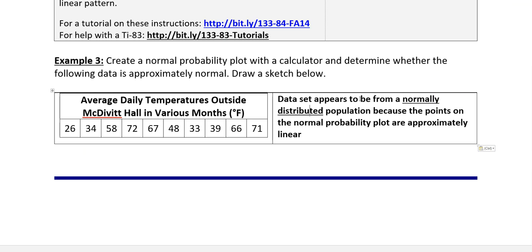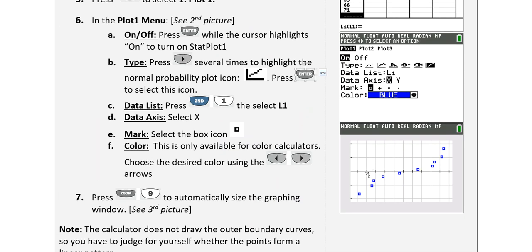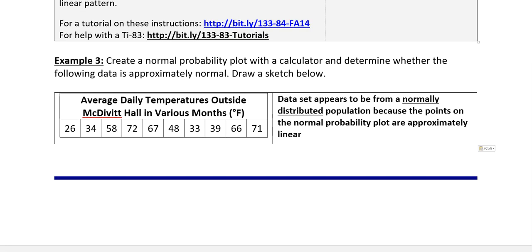The dataset appears to be from a normally distributed population because the points on that normal probability plot are approximately linear. You can draw the graph of it on your paper, but if you're paying attention, you might realize that it's right there because I already did it for the calculator instructions. So there's that piece. All right, we're all done with section 7-3. I hope you enjoyed it.